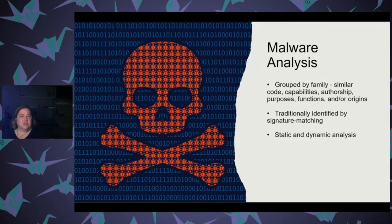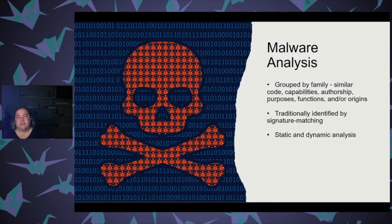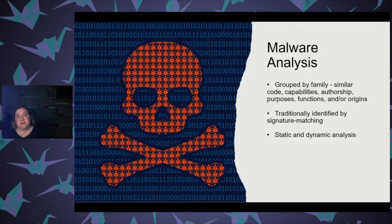Malware analysis is another thing you can use machine learning to do. Typically with malware analysis, you group it by family — code and capability. A lot of times it comes from a group, and it's common to see one kind of malware that's derived from another. The traditional approach is like antivirus — you have a signature, basically a collection of known data, and you try to match it to something known from before. You can also use techniques called static and dynamic analysis. Static analysis would be basically when you take the code apart — disassemble it — and start looking for interesting strings, which show up a lot in malware. Dynamic analysis might be when you run it in a VM sandbox or something like that.